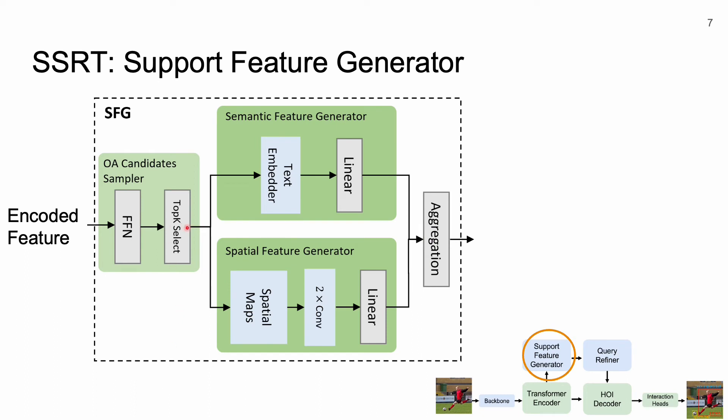We utilize a feed-forward network and top-k selection to select a subset of possible object-action candidates from the encoded feature. Each candidate is converted to a semantic support feature via a text embedder and a linear layer.